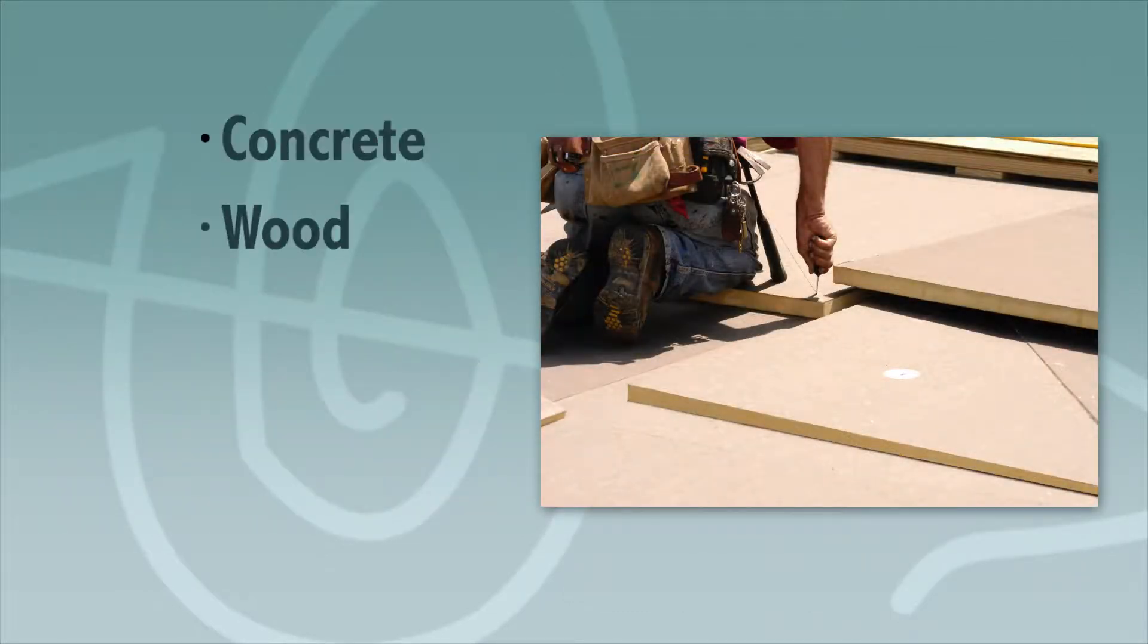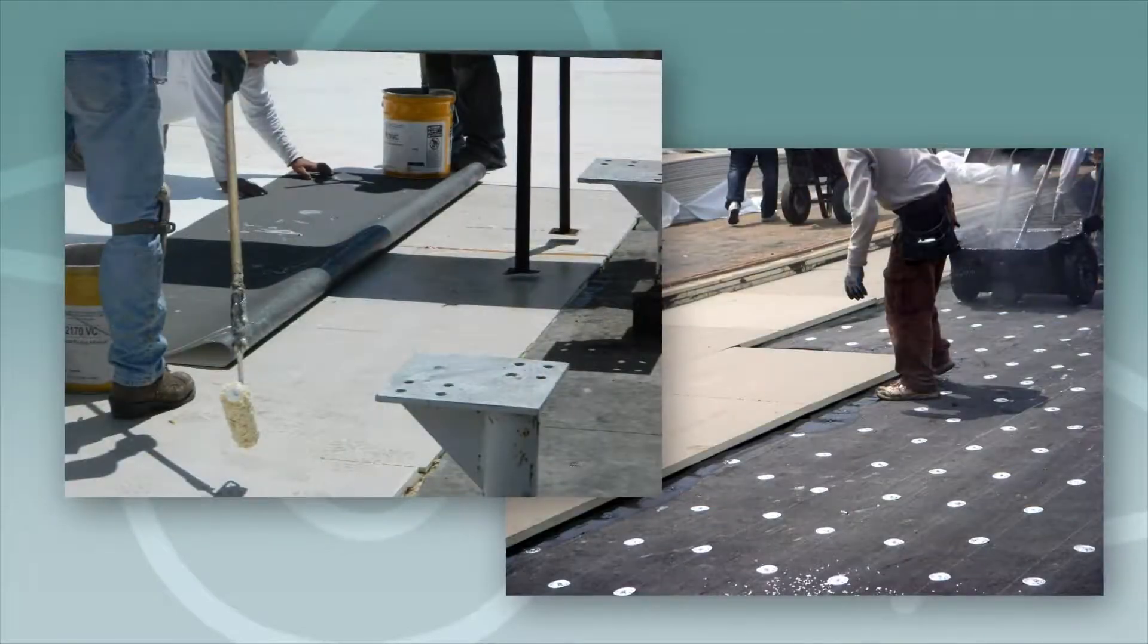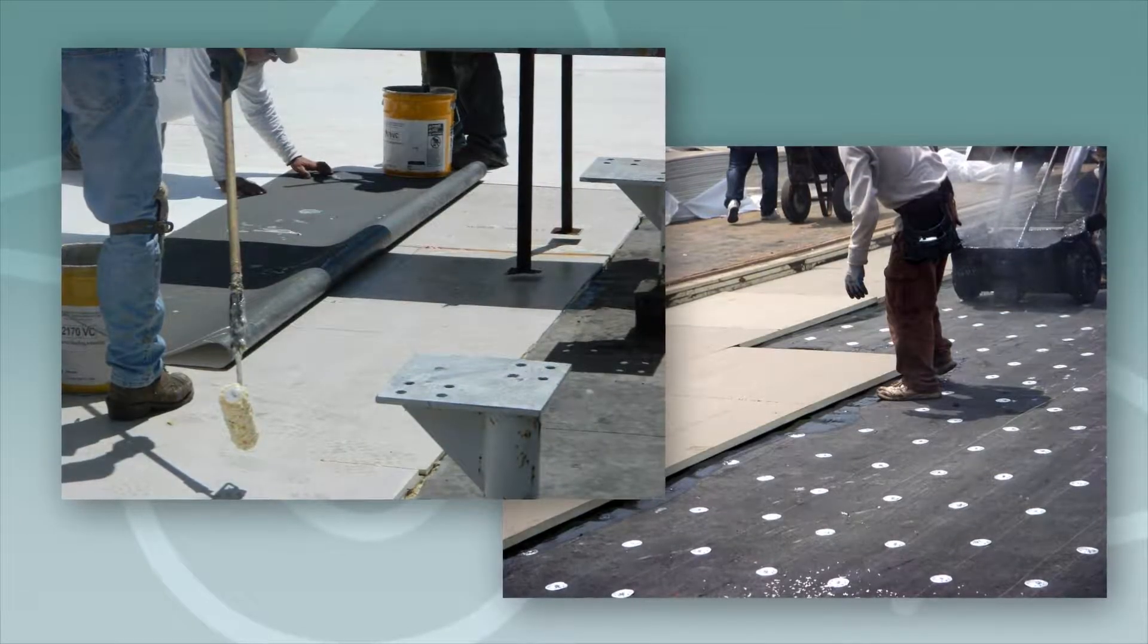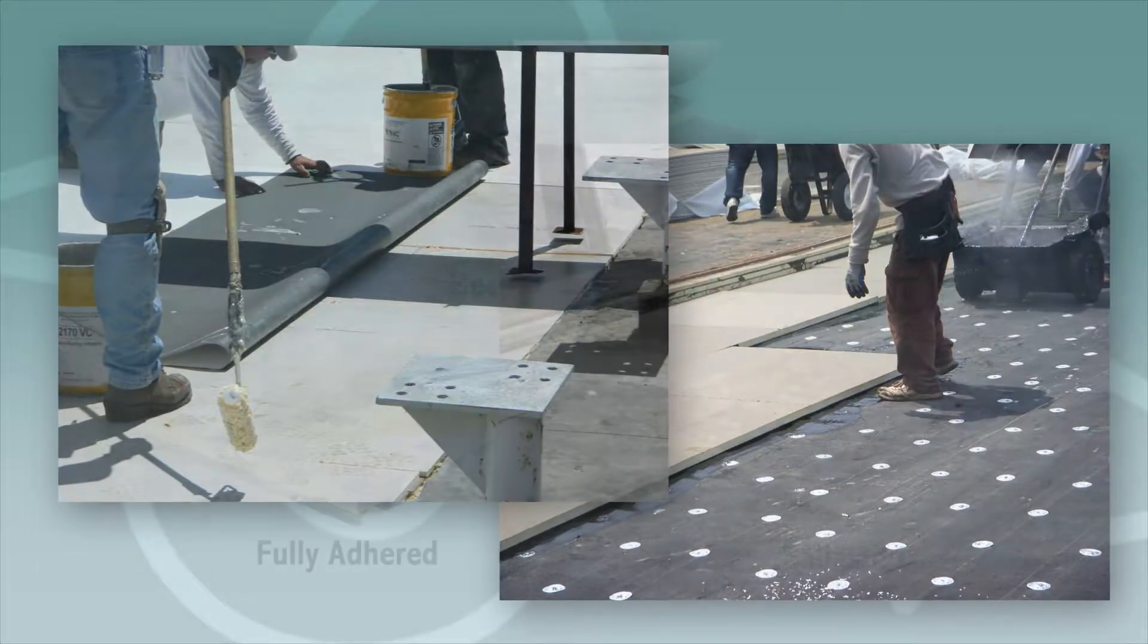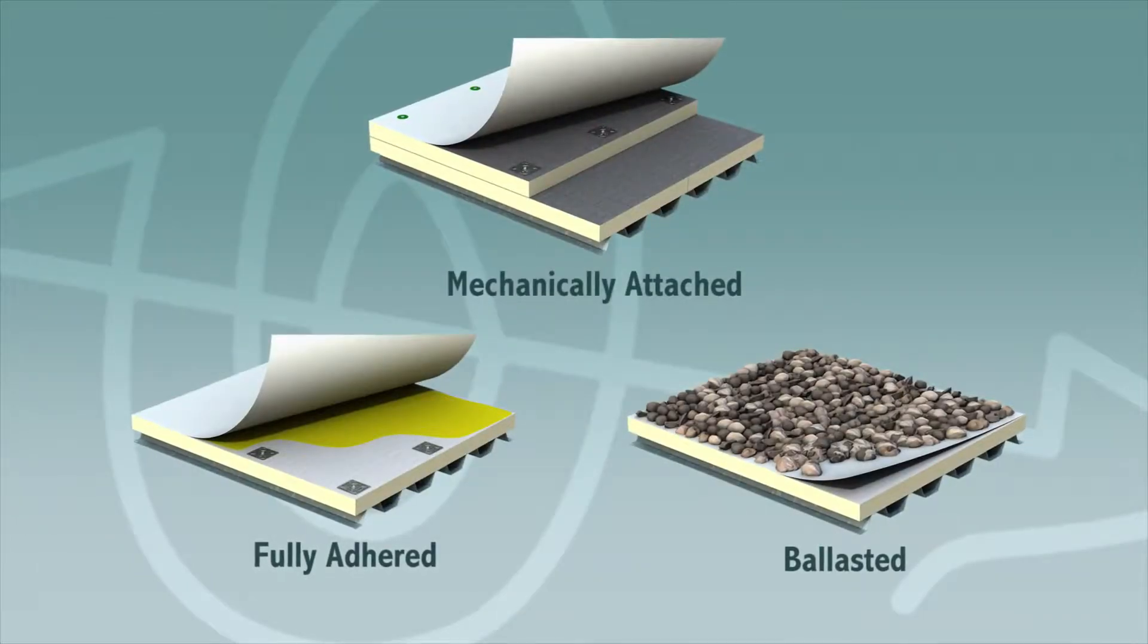These include concrete, wood, gypsum, tectum, and metal. They are compatible with all membrane types and can be mechanically attached, fully adhered, or used in ballasted roofing systems.